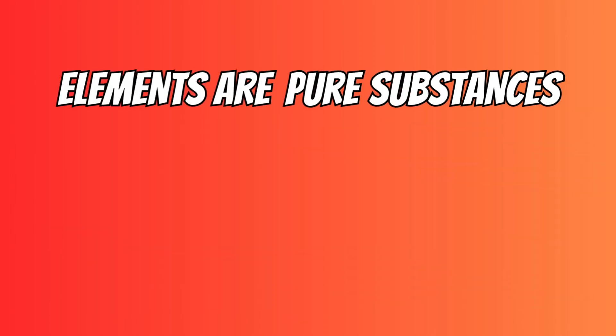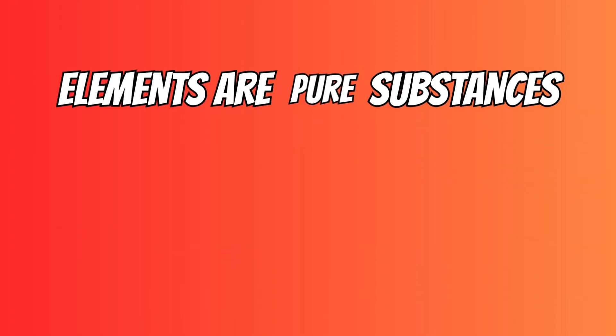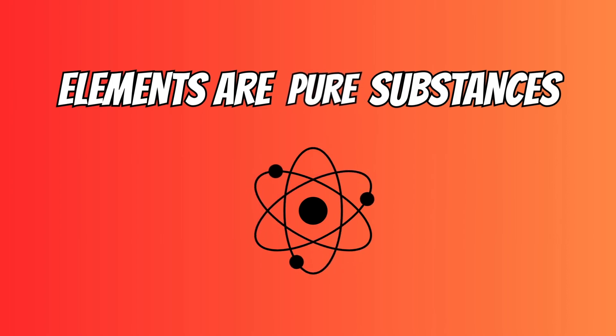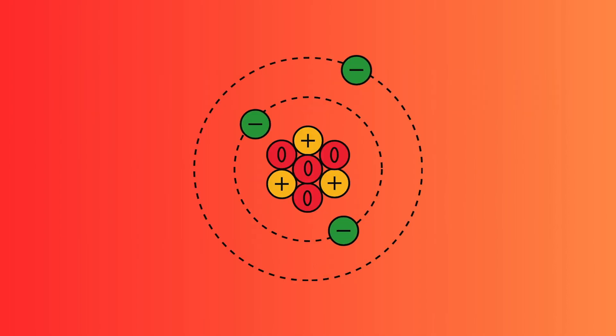Elements are pure substances. That means they're made up of only one atom. An atom is the basic particle of these elements. Each atom has things in it called electrons and protons.